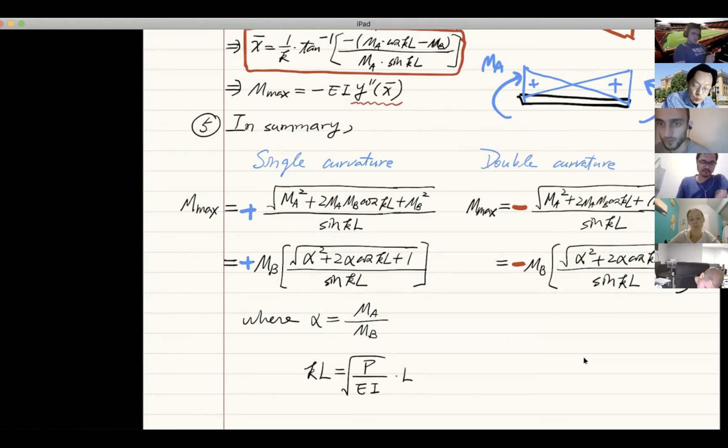What about K? KL is the square root of P over EI times L.